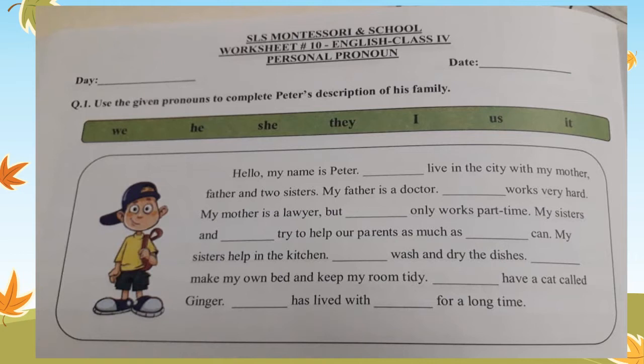Let's start now. 'Hello, my name is Peter. Blank live in a city with my mother, father and two sisters.' In this blank, the boy is talking about himself. So when you are talking about yourself, which personal pronoun are you going to use? The answer is I. So: I live in a city with my mother, father and two sisters.